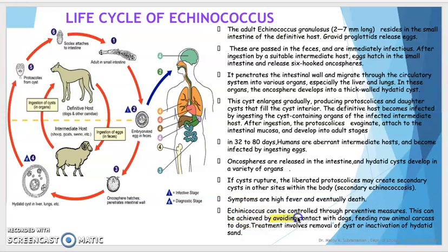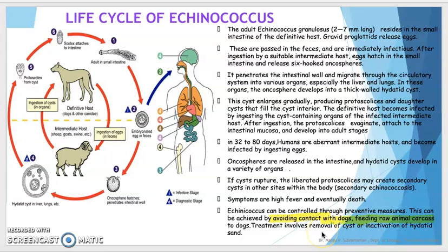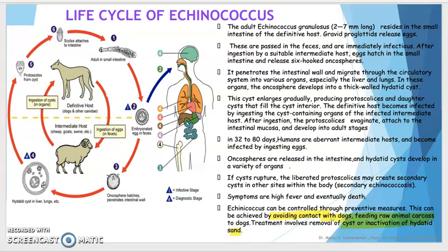Echinococcus can be controlled through preventive measures, including avoiding contact with dogs and not feeding raw animal carcasses to dogs. Treatment involves removal of the cysts or inactivation of the hydatid sand.